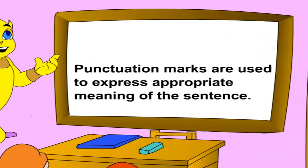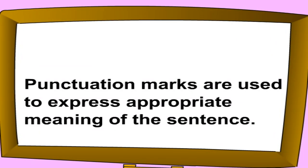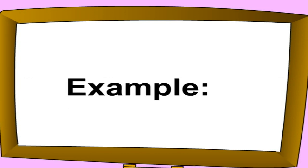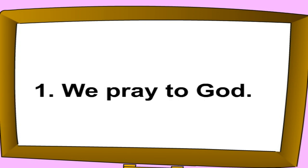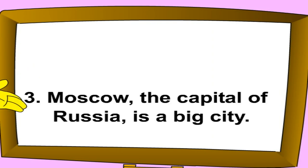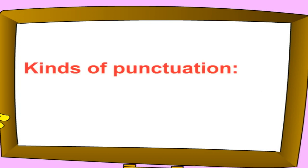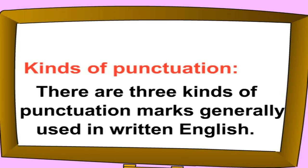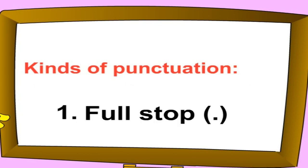Punctuation marks are used to express the appropriate meaning of a sentence. Example: We pray to God. Moscow, the capital of Russia, is a big city. There are three kinds of punctuation marks: one, full stop; two, comma; three, question mark.